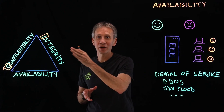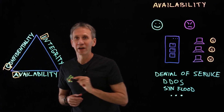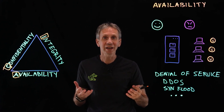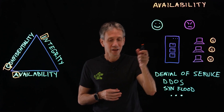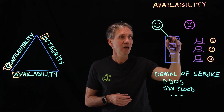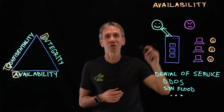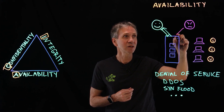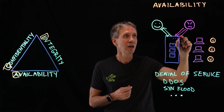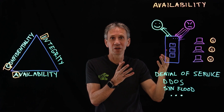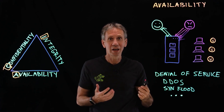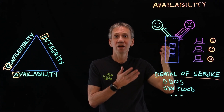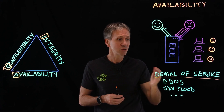Now for the last part of the CIA triangle: availability. Availability means the system and resources should be available to authorized users when they need it. For example, an authorized user hits a web server, looks up his transaction balance, and gets results back. But a bad guy starts flooding the system with transaction requests faster than it can respond. If it can't keep up, we get a denial of service — the system can no longer service legitimate users because of all the illegitimate traffic.